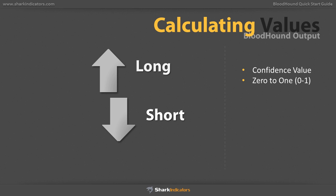Bloodhound, for example, defaults to 0.8 as that threshold, and so any confidence value above 0.8 is considered a valid signal for that direction. This value can, of course, be customized to suit your liking.